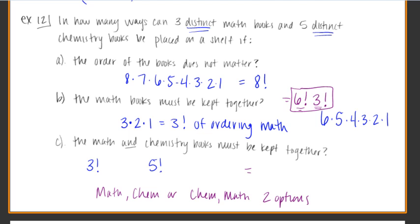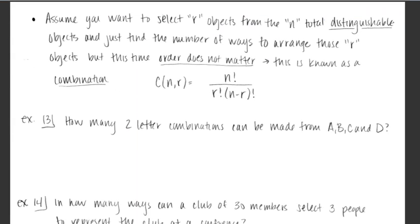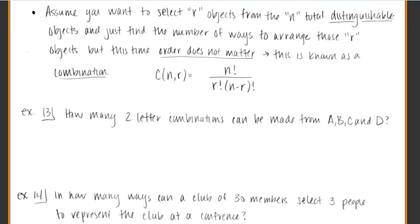Okay, so here's my overall answer, then, for this. I have three factorial ways of rearranging the math among themselves, five factorial ways of rearranging the chemistry among themselves, and then just times two ways of putting them up on the shelf. Either the math, then the chemistry, then the chemistry, then the math. And there's the answer for that one. Okay, let's go to the next idea.